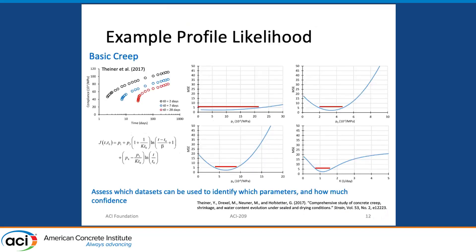This is an example of how the profile likelihood works — this example is actually for creep, but it is the same idea for shrinkage. We have our compliance for creep, J, and it has variables P1 to P4 which represent the parameters I need to fix. The way this works is you fix one parameter and find values for the other parameters with that fixed value, which gives best fits and bounds, which I plot in Excel. The x-axis represents the value of the parameter being set and the y-axis represents the mean square error — you want a low mean square error value. In this example the mean square error threshold is set to 5. The best fit is represented by the vertex of the parabola, while the bounds are located where the mean square error equals 5. In this process I fit the parameters in multiple different scenarios to get the final values put into the model.